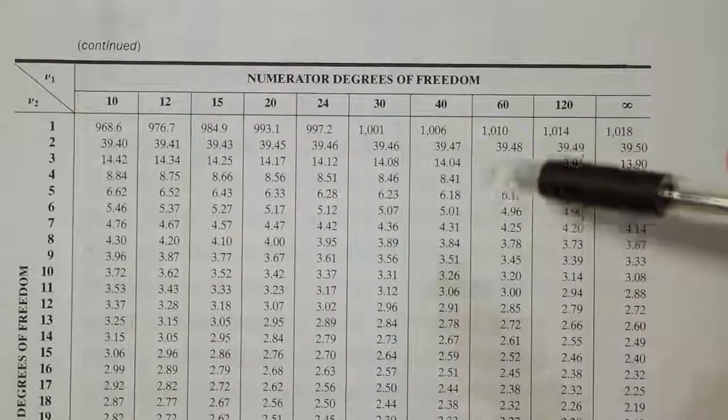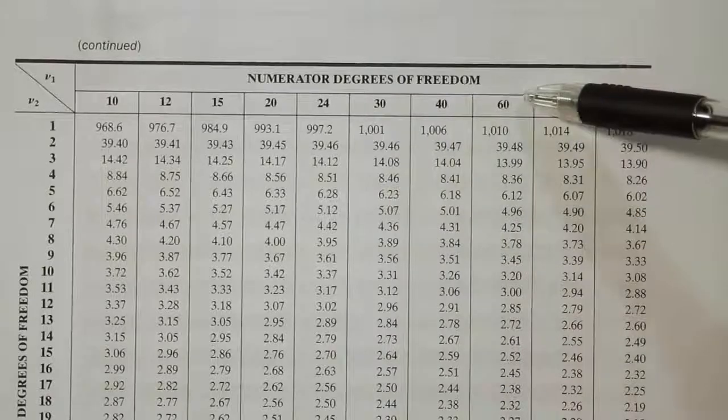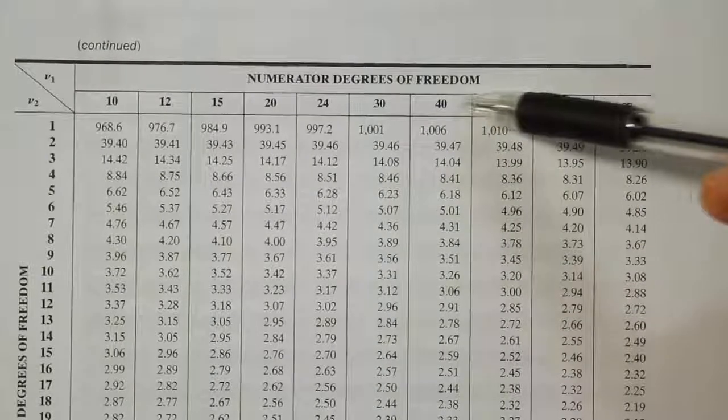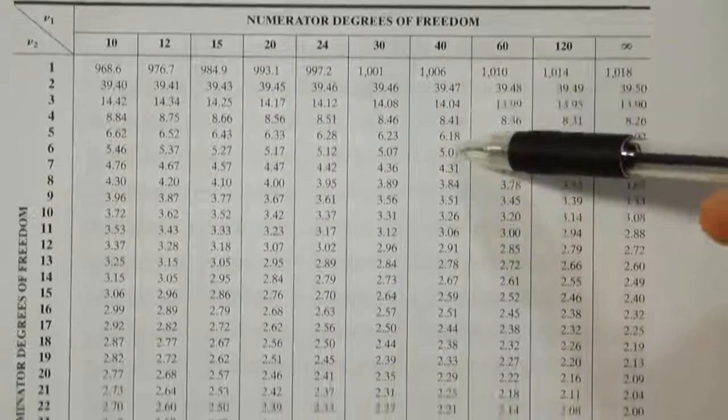Now when I come over here, I see there's a 40 and then there's 60. There's no 45. Let's go down and see the two numbers that we can find in the 29 row for denominator degrees of freedom.